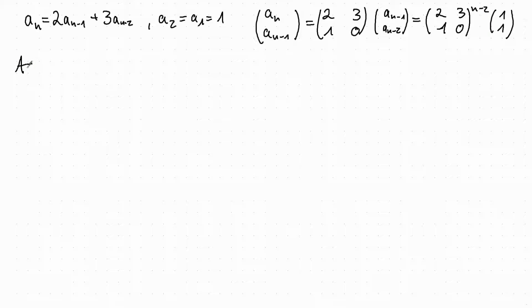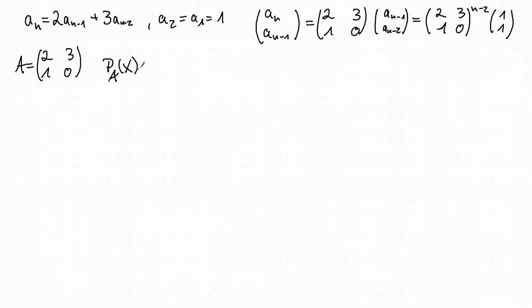We take A to be the matrix [[2,3],[1,0]] and diagonalize it. We start by computing the characteristic polynomial. Since we covered the diagonalizing procedure in the first videos, we won't go into every detail here. The characteristic polynomial is (x+1)(x-3), and the two eigenvalues are -1 and 3.